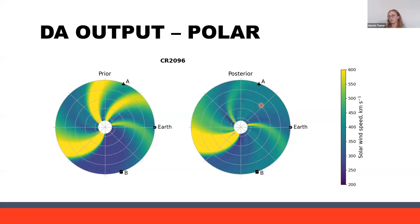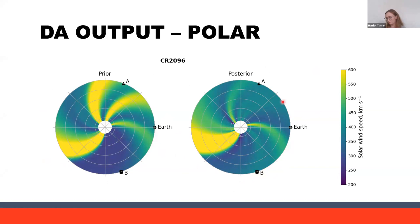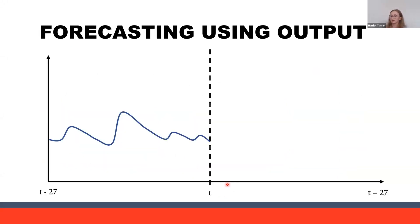This is an example output from BRAVDA. We have our prior conditions — before any DA — and the posterior, which is after DA. You can see there has been quite a bit of change when the scheme has been updated with the observations. For example, this stream here has massively reduced in magnitude, this one has all but disappeared, and this one has been made a bit wider when updated.